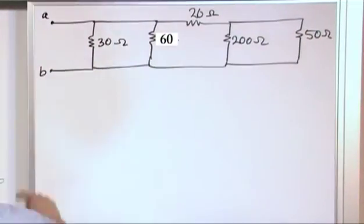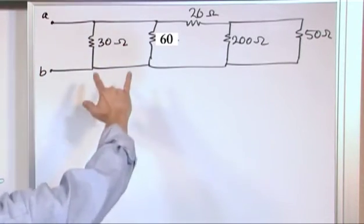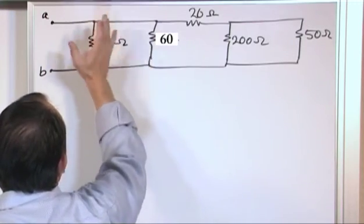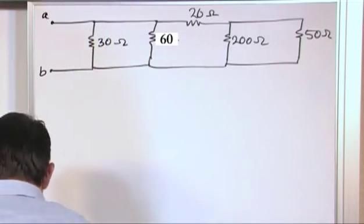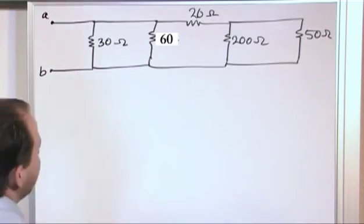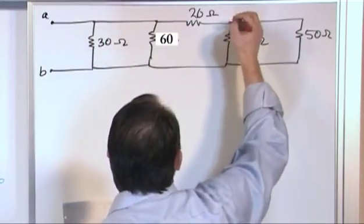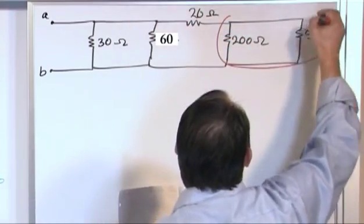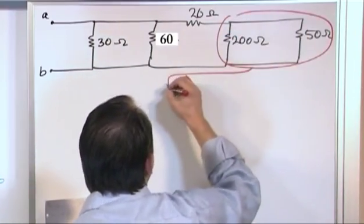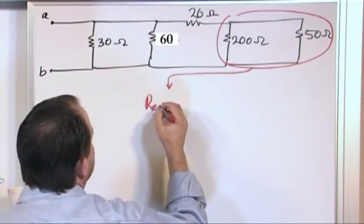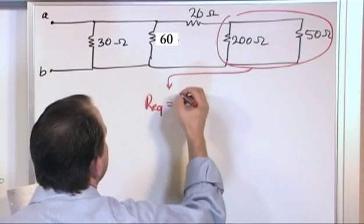Question is what's the resistance looking in from A to B? So again yeah these are in parallel and you could start here and combine these guys and get an equivalent resistance. That's cool, but it doesn't really serve any great purpose. You might as well start at the end of the circuit and work your way methodically backwards. So we'll see that these guys are in parallel, and again it's only two resistors. So the equivalent resistance is product over sum.